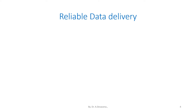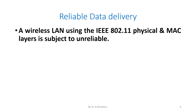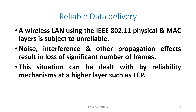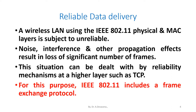Let us see reliable data delivery. A wireless LAN using the IEEE 802.11 physical and MAC layers is subjected to unreliable conditions. Noise, interference, and other propagation effects result in loss of a significant number of frames. This situation can be dealt with by reliability mechanisms at a higher layer such as TCP. For this purpose, IEEE 802.11 includes a frame exchange protocol.